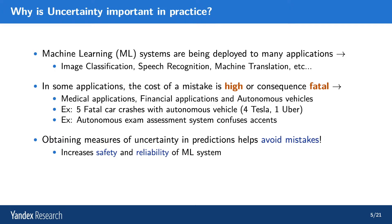We can also discuss the more practical aspect of uncertainty estimation. Machine learning systems have been deployed to many applications, like image classification, speech recognition, machine translation, dialogue systems, medical and financial applications, and autonomous vehicles. In some of these applications, the cost of a mistake can be high — for example, in terms of reputation, money, or the consequences can simply be fatal.